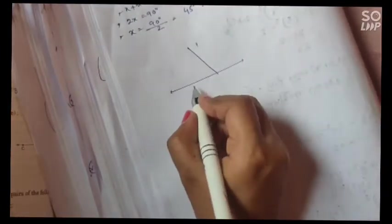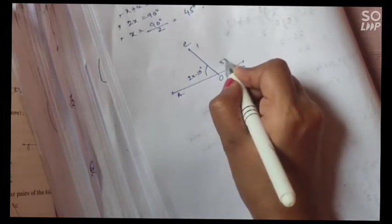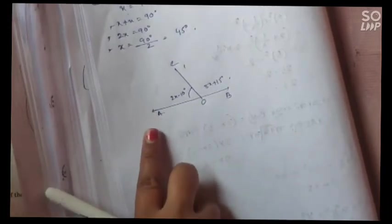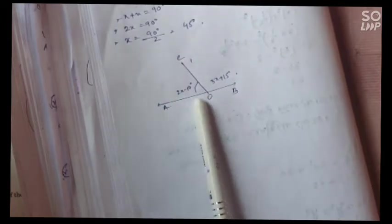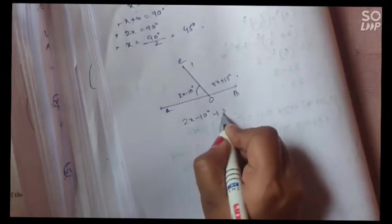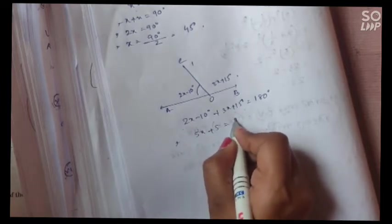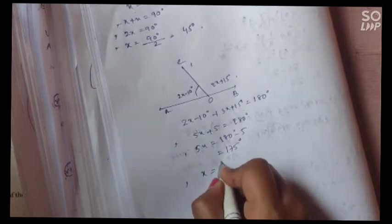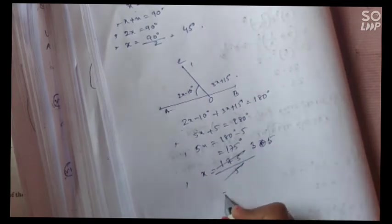Question 2: Draw the figure with points A, B, C, O. Angle AOC = 2x − 10 degrees and angle BOC = 3x + 15 degrees. These two angles form a linear pair with common arm OC, common vertex O, and non-common arms OA and OB on a straight line. So: (2x − 10) + (3x + 15) = 180, giving 5x + 5 = 180, so 5x = 175, therefore x = 35 degrees.